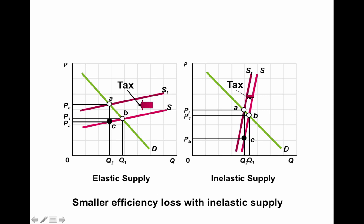The government taxes for two reasons. One is to raise revenue — that revenue gets used to do all sorts of things; everything the government does requires money. The other is to change behavior: maybe make people stop smoking, put a tax on soda to encourage healthy eating, or give people a tax break if they own their home because homeowners tend to take better care of their community.